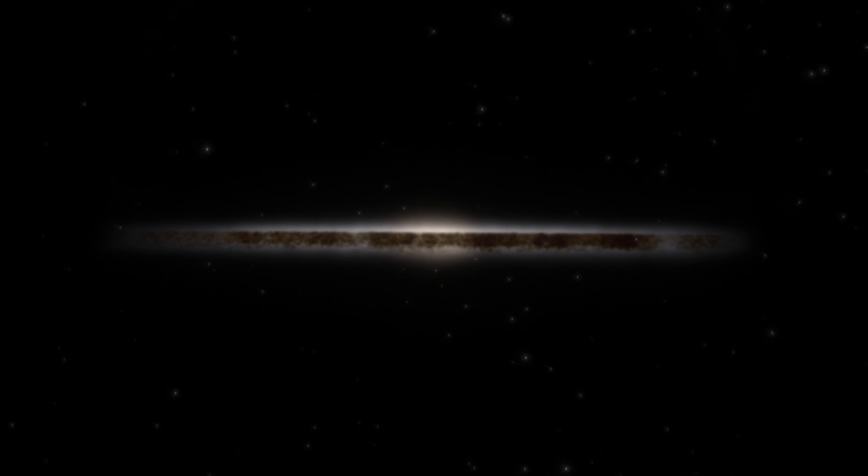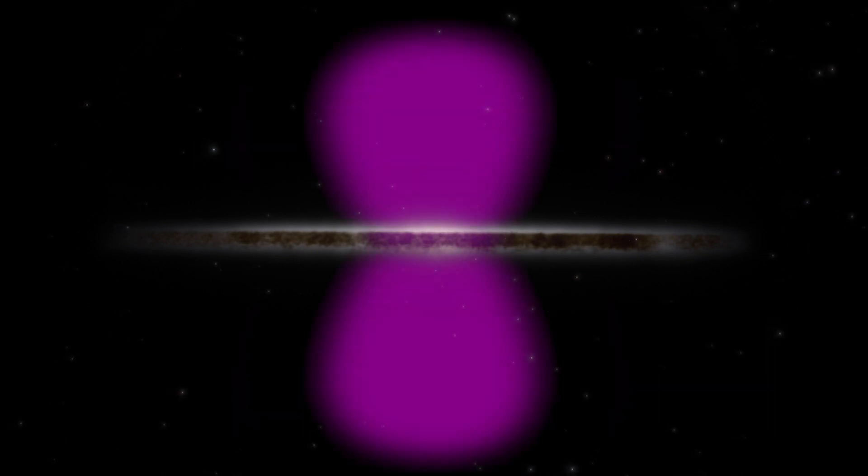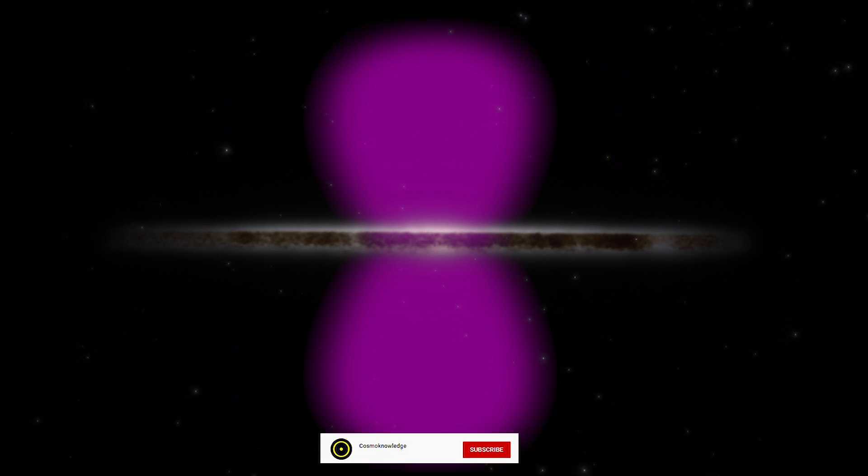Last year, astronomers spotted two giant bubbles of radio energy around the Milky Way's central black hole. They hint at a violent past for the Milky Way's heart.